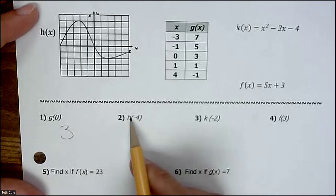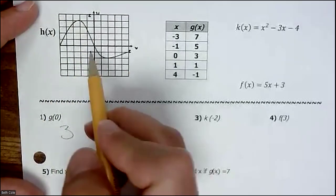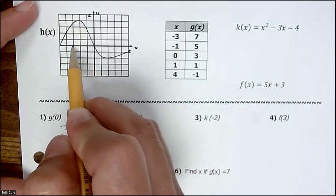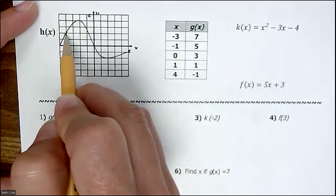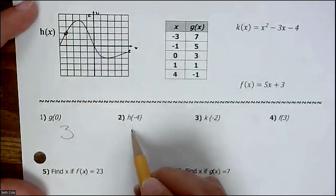This one says h, so I need to look at this graph, h of x. h of negative 4, so I'm going to find negative 4 on the x-axis. I went negative 4, 1, 2, 3, 4, find where that hits the graph, and that hits on the y-axis at 2.